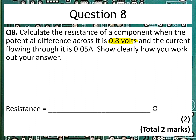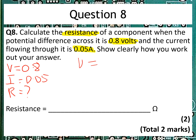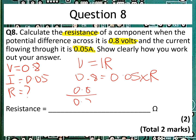We've got 0.8 volts and a current of 0.05 amps, and we're asked to find the resistance. We jot down: V is equal to 0.8, I is equal to 0.05, and we're trying to find R. Using Ohm's law, V equals IR, and putting the numbers in: 0.8 is equal to 0.05 multiplied by R. Reverse the maths: 0.8 divided by 0.05 gives us 16. And we've already been given the units.